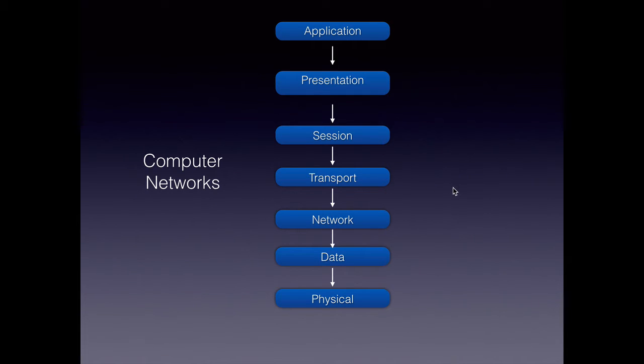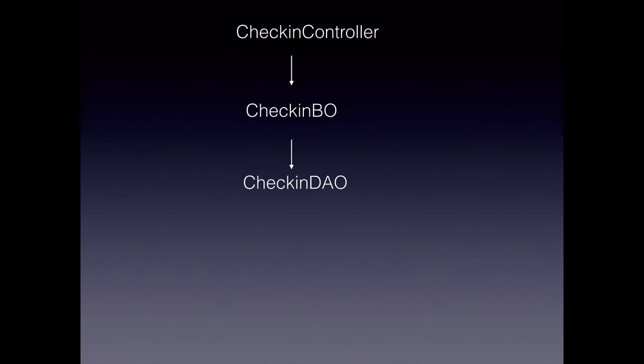Similarly, in the Java EE world, let's take an example wherein we are developing an application which allows a passenger to check in onto an airline. To do that, we will not put our entire code — the business logic, the presentation logic and the database access logic — in one single class. We divide it into multiple classes. The DAO is going to access the database, the business logic goes into the BO, and then the controller is responsible for displaying a beautiful UI onto a browser or a mobile phone.